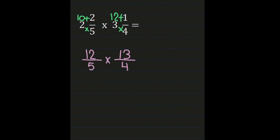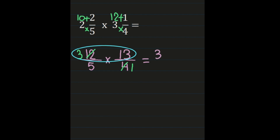Before multiplying, I notice that 4 and 12 share a common factor of 4, so I'll simplify first. 4 divided by 4 is 1, and 12 divided by 4 is 3. Now multiplying the numerators: 3 times 13 gives a new numerator of 39. Then multiplying the denominators: 5 times 1 gives a denominator of 5.